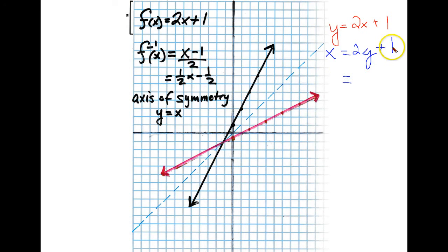Well, the first thing we do is bring over our 1. So that becomes x minus 1, and then that still equals 2y. And then we divide everything by 2. And we get y equals x minus 1 over 2. And then we put it in inverse notation.